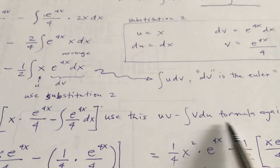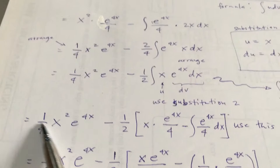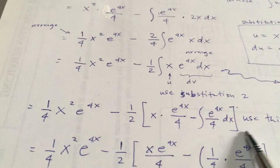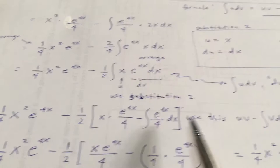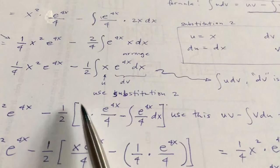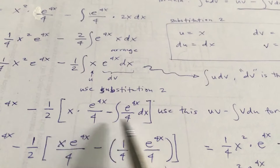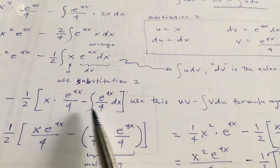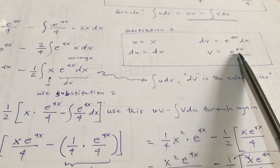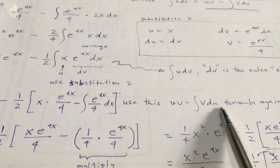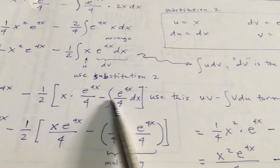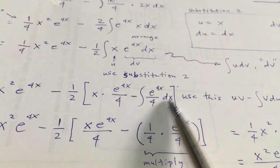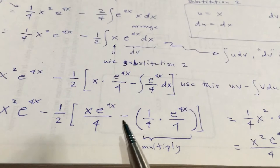Going back, we are going to use the formula again. Copy this down and place a big bracket here because we are going to use the formula once more. uv: u is x, v is e raised to the 4x over 4, minus the integration of v du. v is e raised to the 4x over 4, and du is dx.